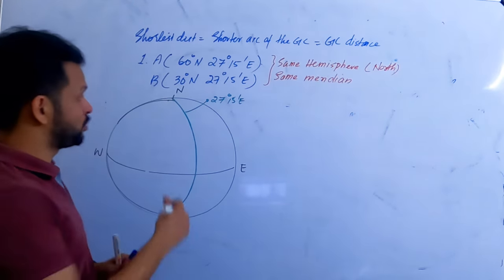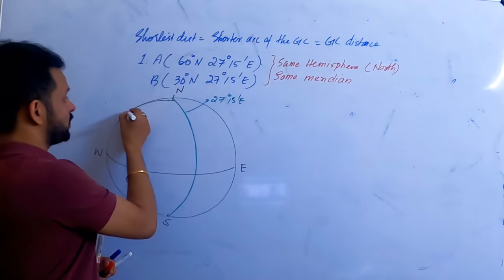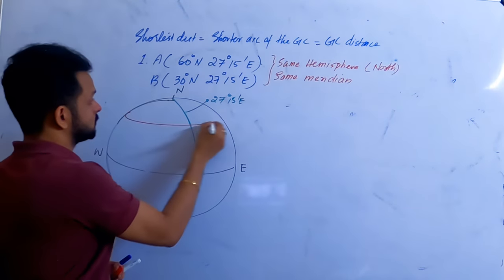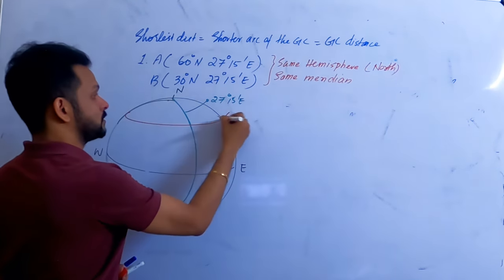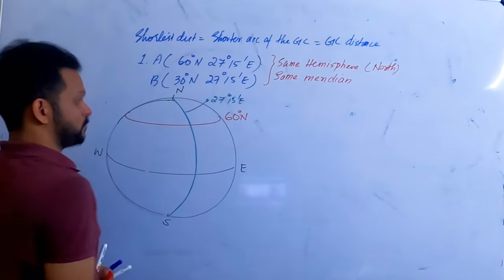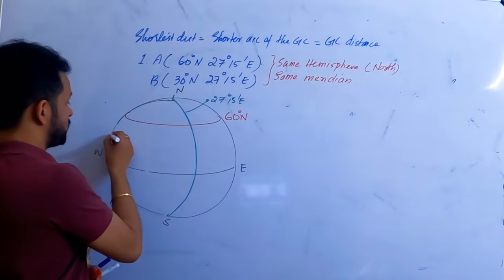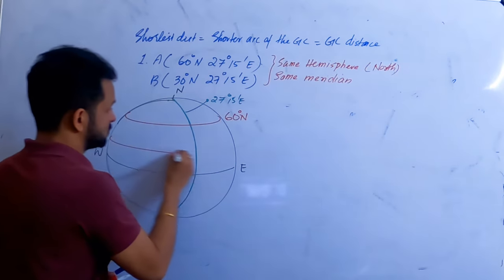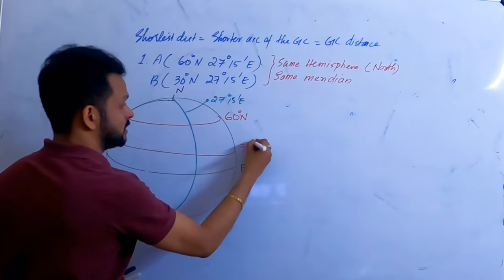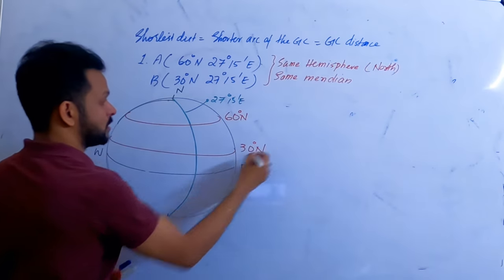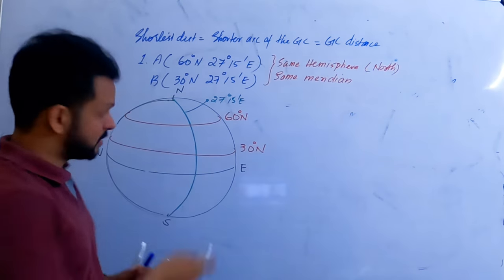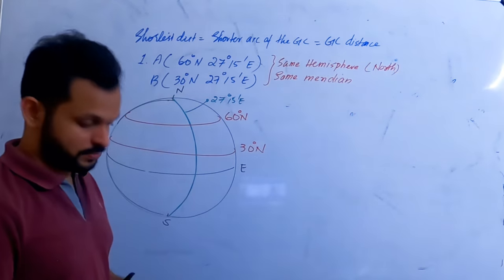Which one is going to be more closer to the poles? 60 degrees north — that's right. 60 degrees north is closer to the poles, and then we also have 30 degrees north, which is closer to the equator — or you can say closer to the south pole. That's also correct.